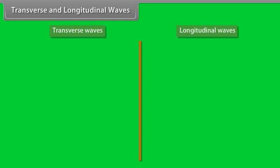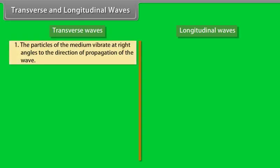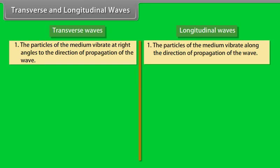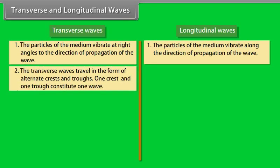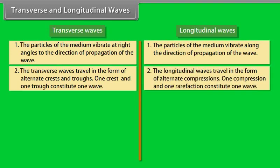Let's make the difference between transverse waves and longitudinal waves. Number 1: in transverse waves the particles of the medium vibrate at right angles to the direction of propagation, whereas in longitudinal waves the particles vibrate along the direction of propagation. Number 2: transverse waves travel in the form of alternate crests and troughs — one crest and one trough constitute one wave — whereas longitudinal waves travel in the form of alternate compressions and rarefactions — one compression and one rarefaction constitute one wave.